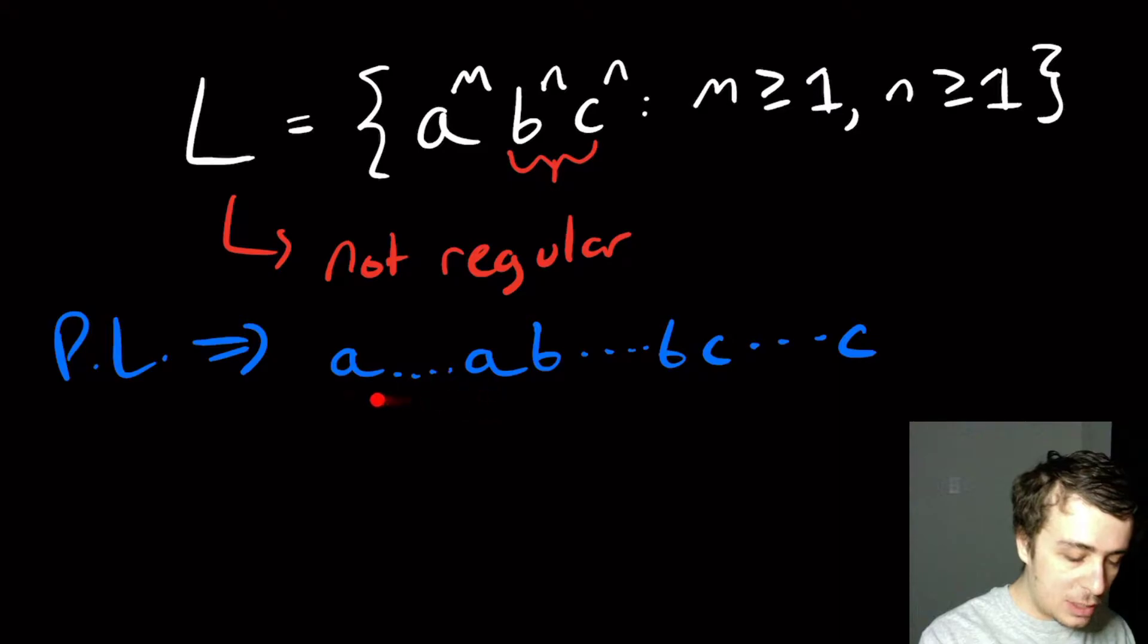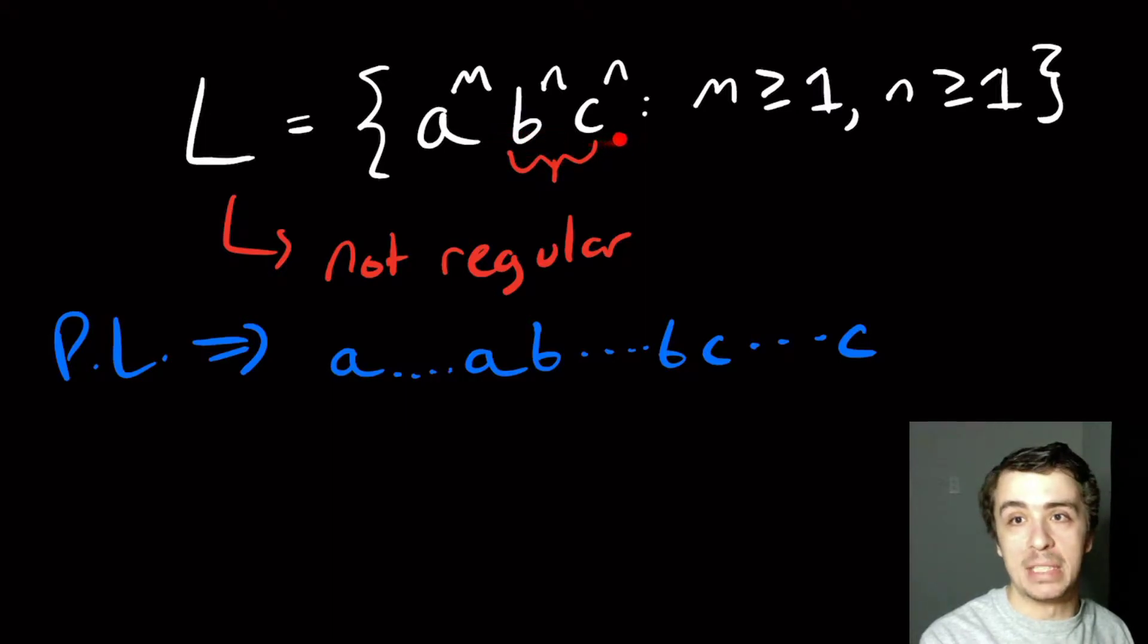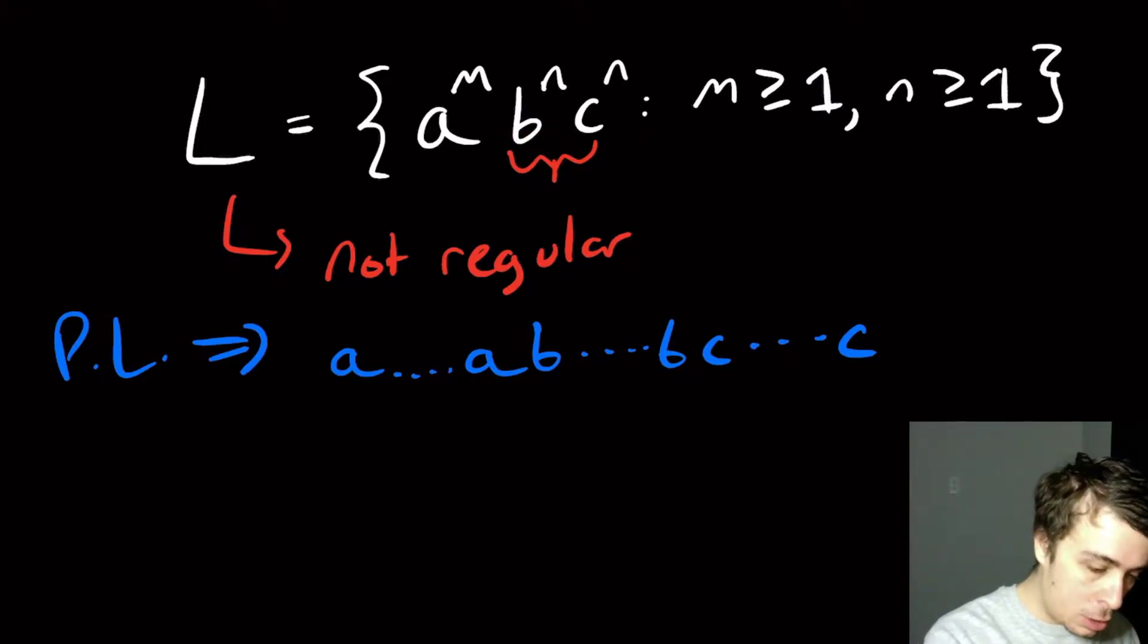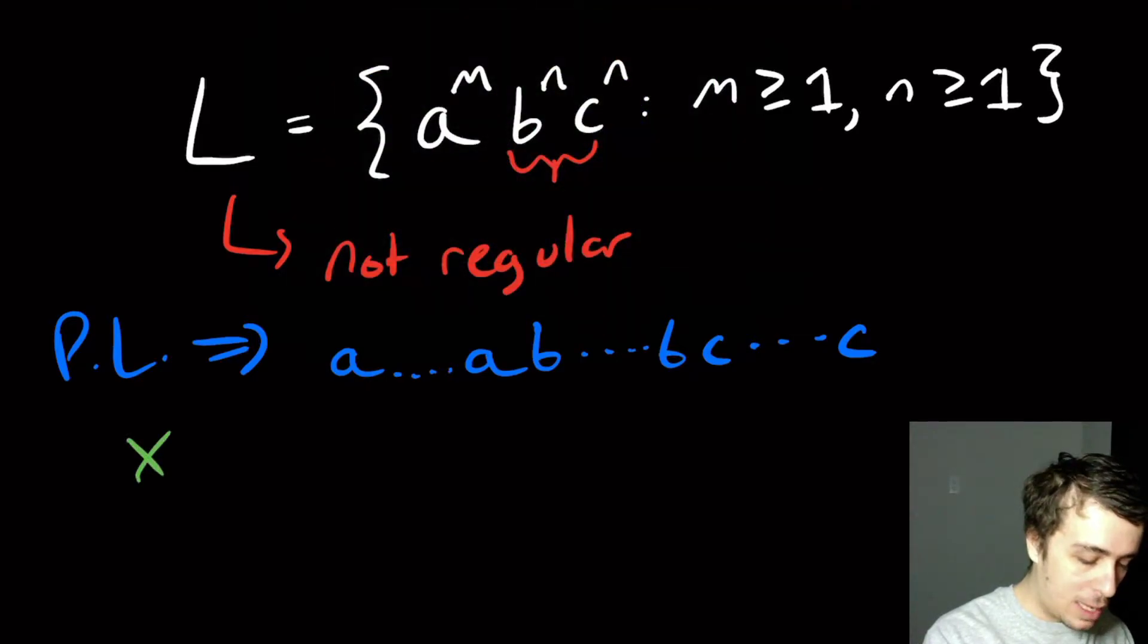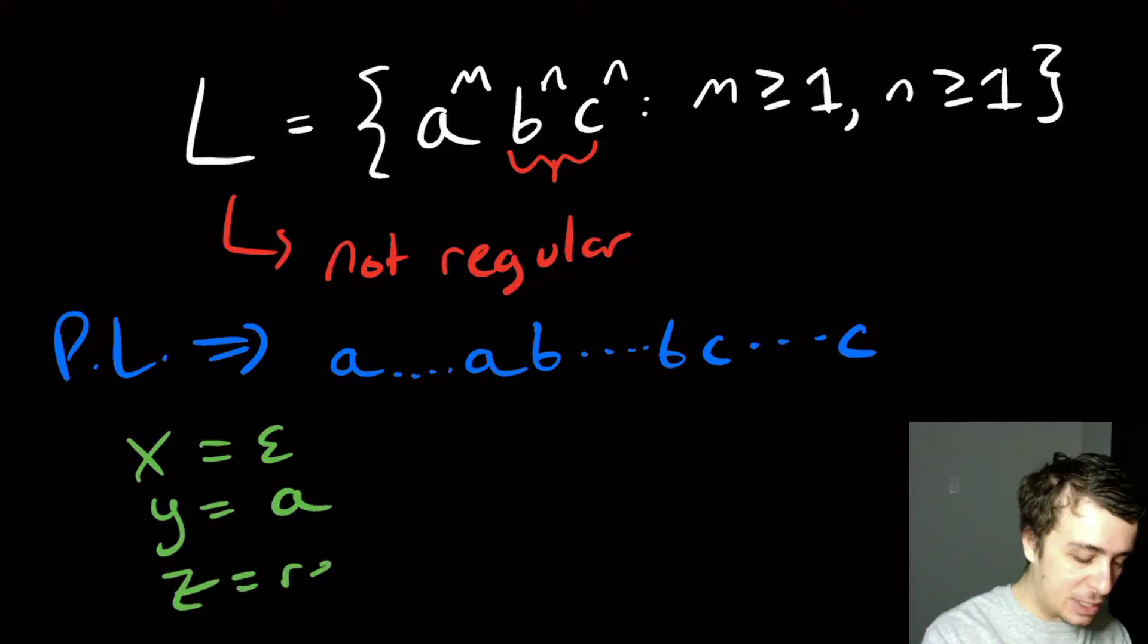And we notice that the number of a's here, according to the definition of the language, is not correlated with the number of b's and c's here. So no matter what happens, let's suppose that we had our decomposition x, y, and z, where x is the empty string, y is a single a, and z is the rest of the string.